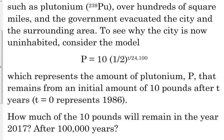Here's the model. P is equal to 10 times one-half to the T over 24,100. That represents the amount of plutonium that remains after an initial amount of 10 pounds, just 10 pounds, of this radioactive material was released. And, this is the model that represents how much is still in that area. So, T equals zero represents 1986. You've got to look out for things like this in these word problems when they tell you what T represents. So, T equals zero represents the year 1986.